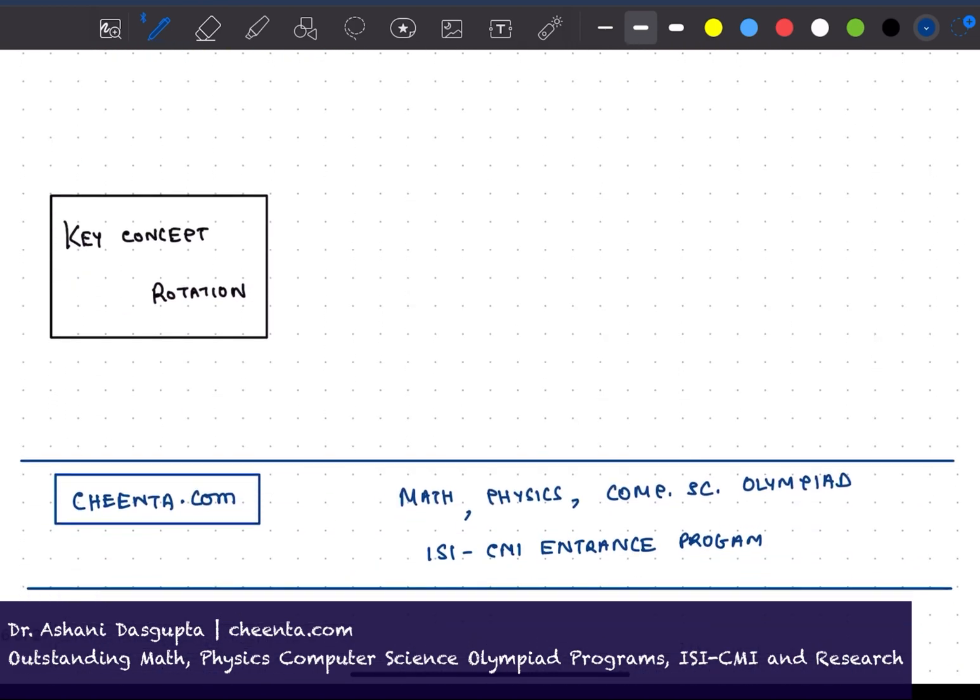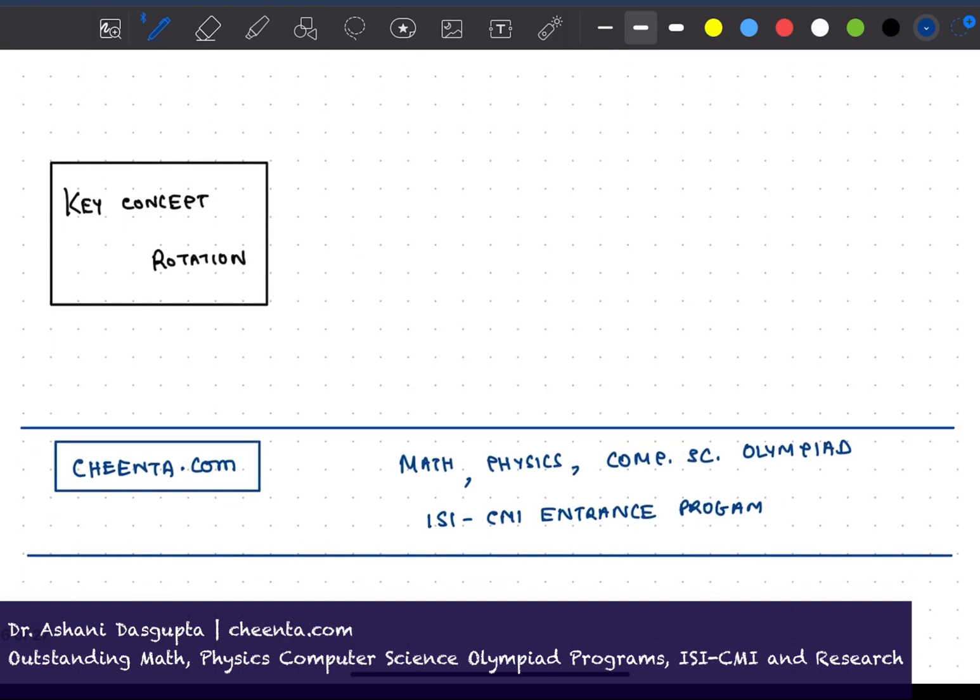So the key tool that we will be using here is called rotation. I want to say a few things about rotation here. Rotation is an isometry. Isometry means it preserves distances, lengths and in this case even area.